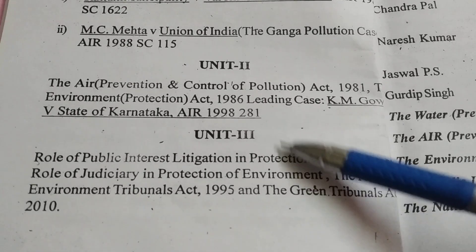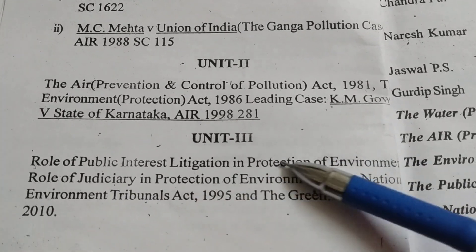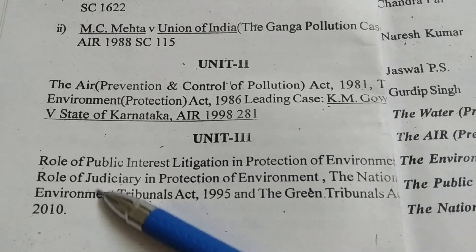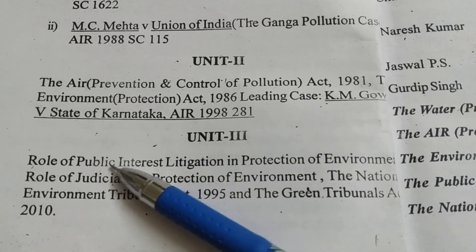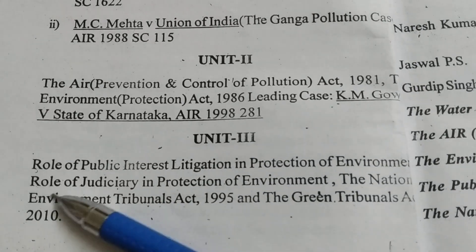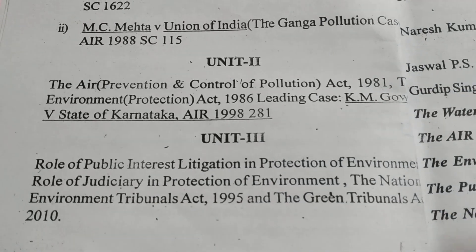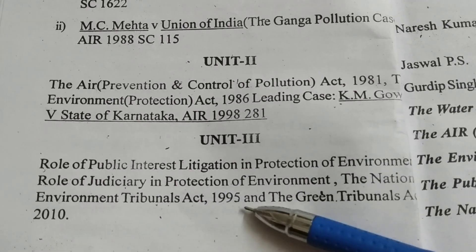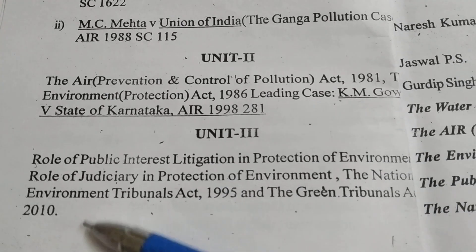Unit 3 covers the role of Public Interest Litigation (PIL) in protection of the human environment, the role of the judiciary in protection of the environment, the National Environment Tribunal Act 1995, and the Green Tribunal Act 2010.